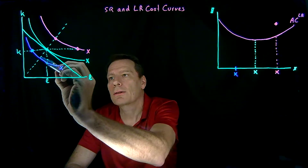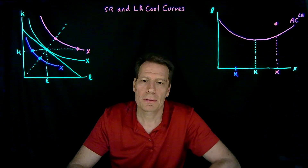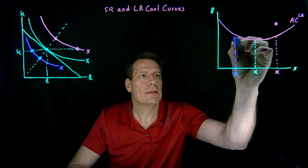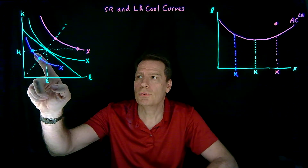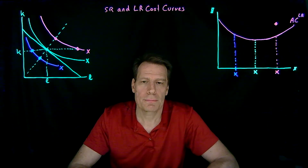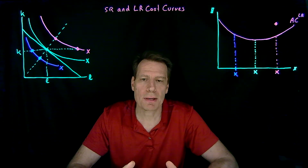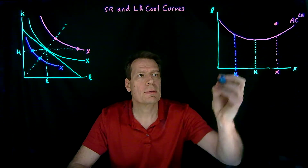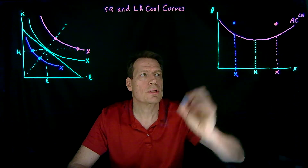So in the long run it'll choose the cost-minimizing production plan, which gives us the long-run average cost. But in the short run it's going to choose a plan that's more expensive. If we add up the short-run cost on labor, plus the expense on the fixed capital, plus any recurring fixed cost, that's going to be higher than the long-run average cost of producing that much.